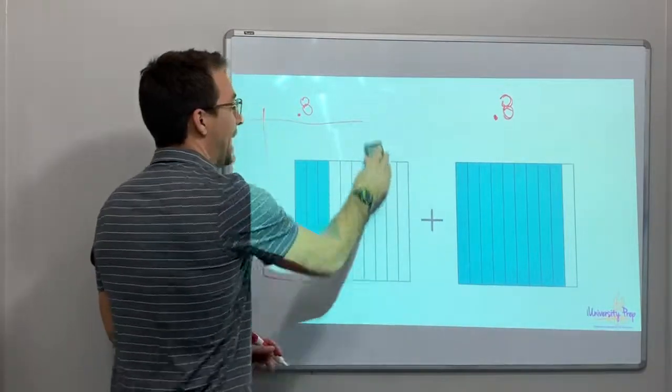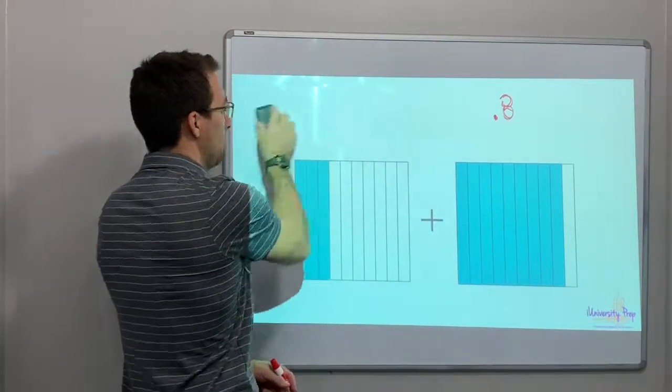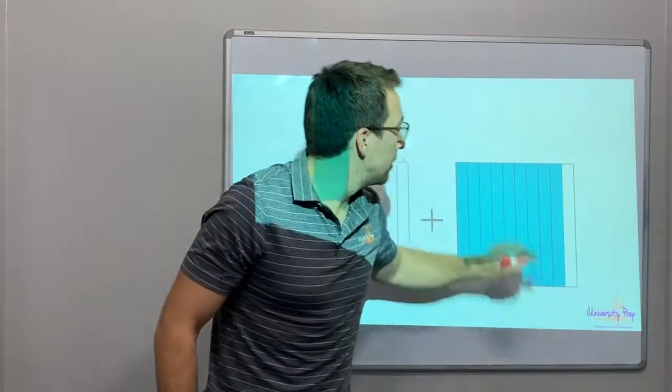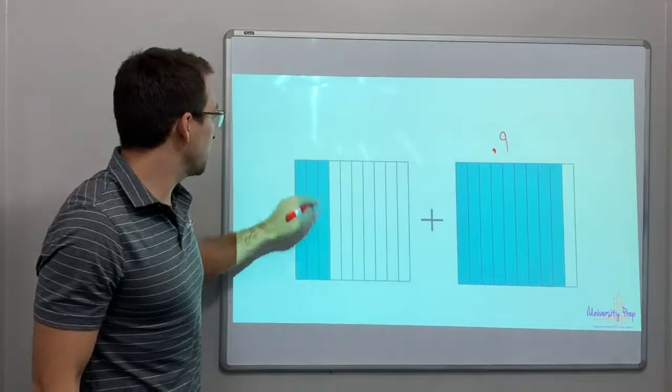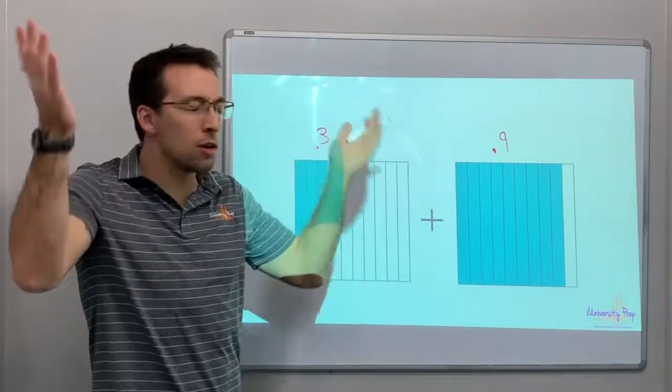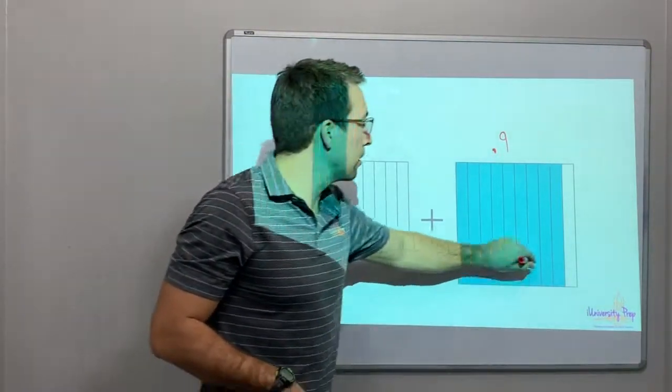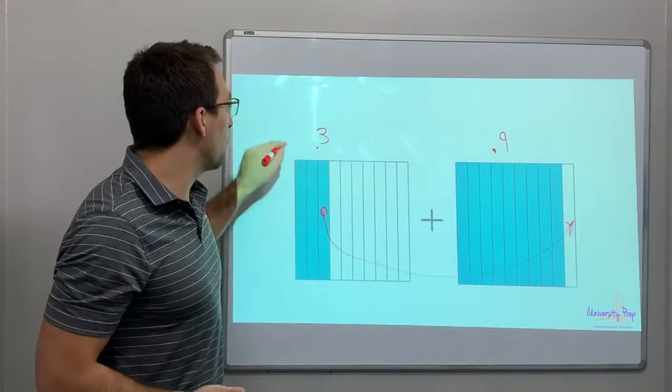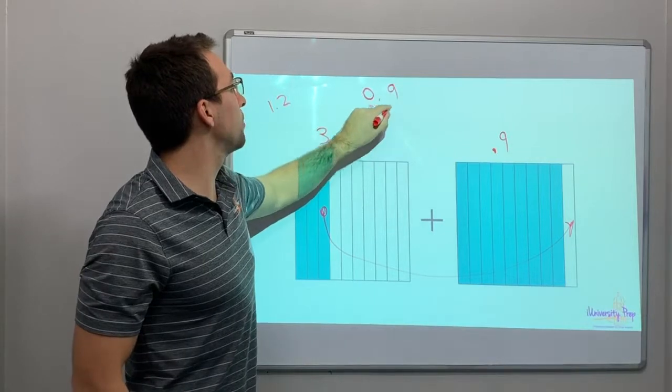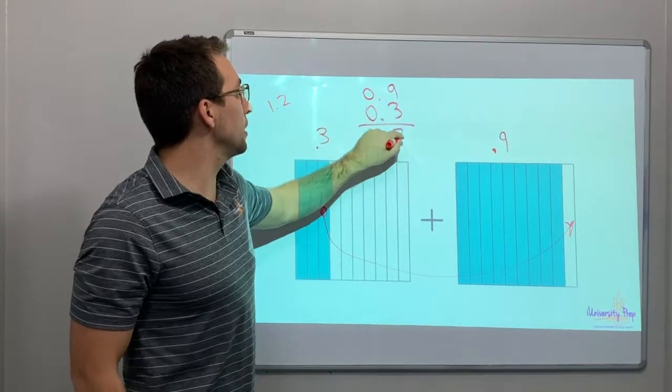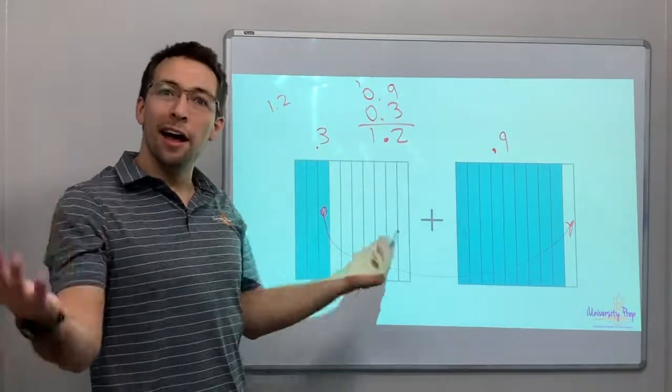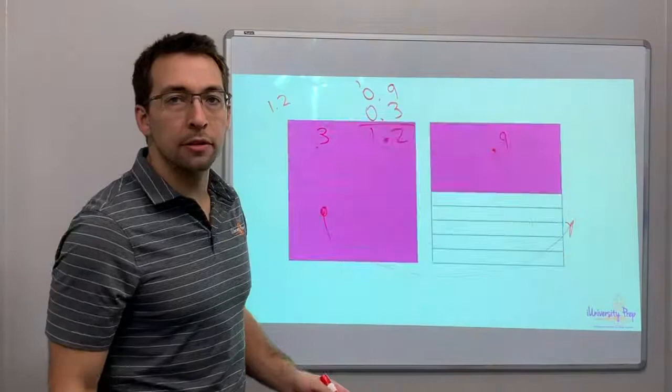So now, what happens if we add these two models together? We have, wait, nine tenths plus three tenths. Well, what's three tenths plus nine tenths? That equals, we could move this one over here, and what do you get? One point two. Yeah. So if we have zero point nine plus point three, nine plus three is twelve. Drop my decimal. Carry over one. One point two. It's pretty cool. So we're adding decimals with models here.